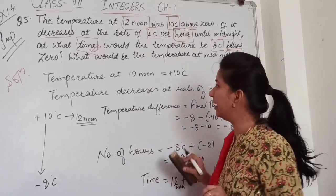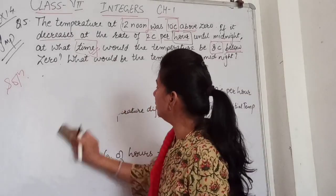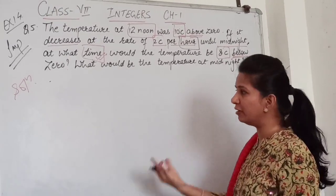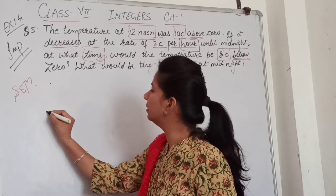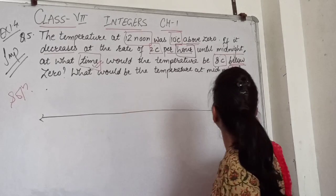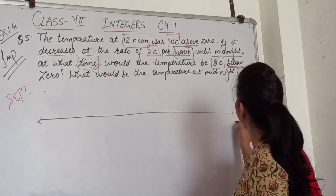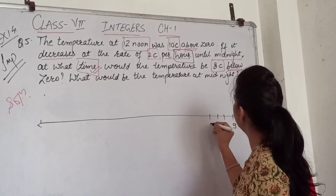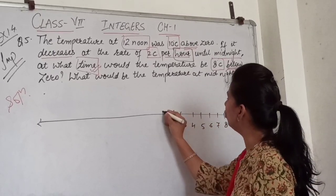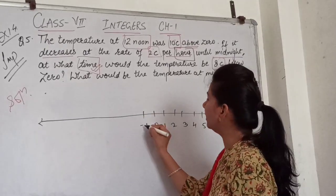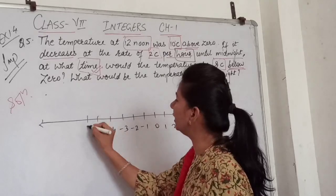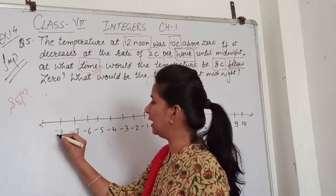I will show you the number line. This is 10, 9, 8, 7, 6, 5, 4, 3, 2, 1, and this is zero. And minus 1, minus 2, minus 3, minus 4, minus 5, minus 6, minus 7, and minus 8. I will show you how all the temperatures occur.